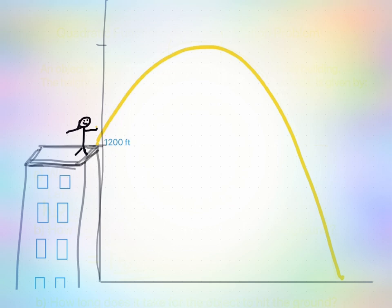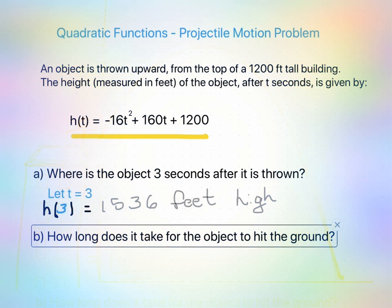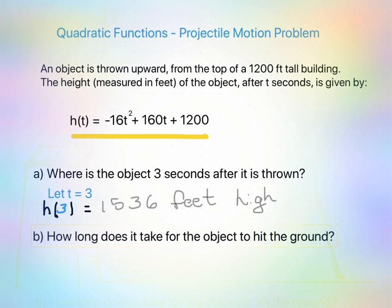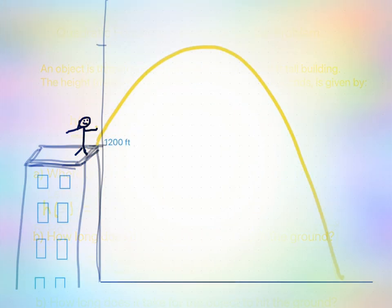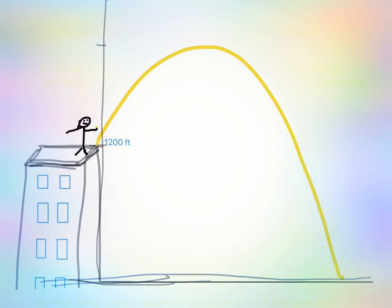Part B. How long does it take for the object to hit the ground? What does this mean? Let's think about it. How long does it take for it to hit the ground? What that would mean is that the height would actually have to be at zero.